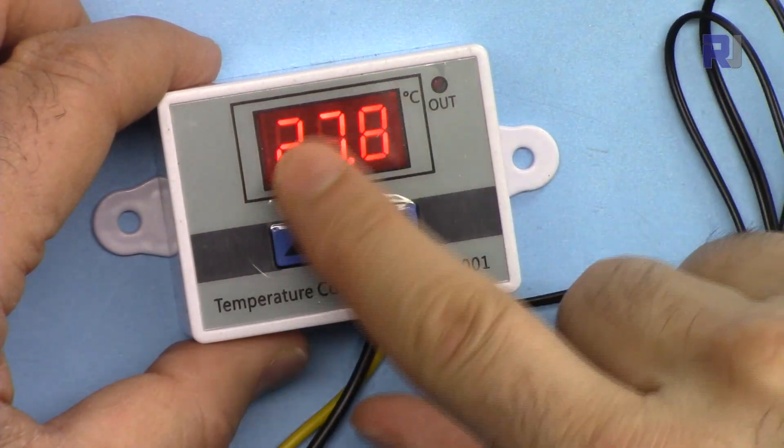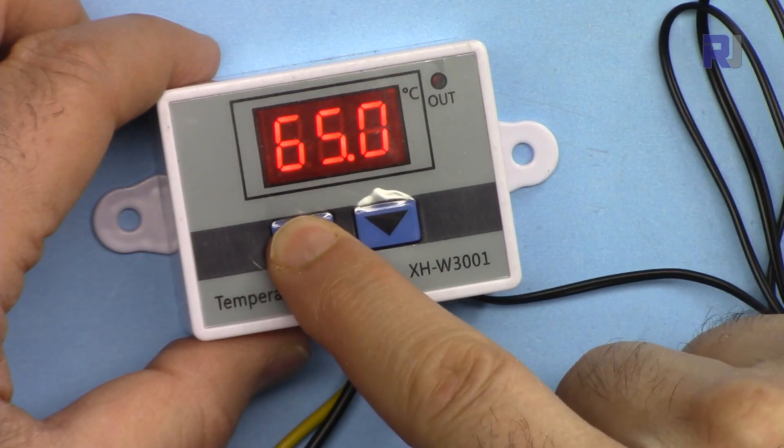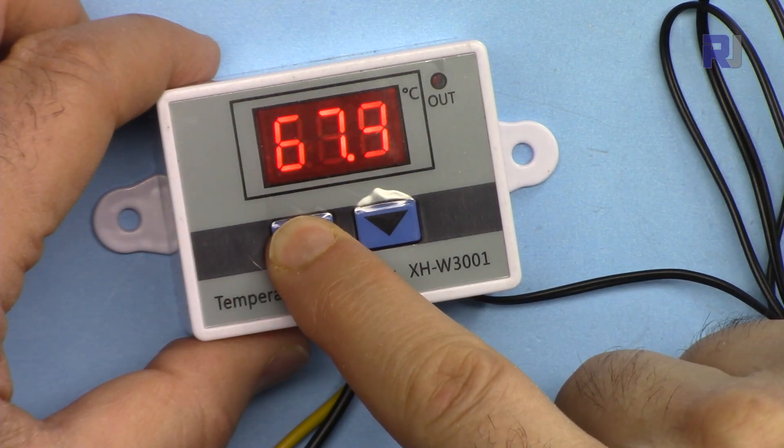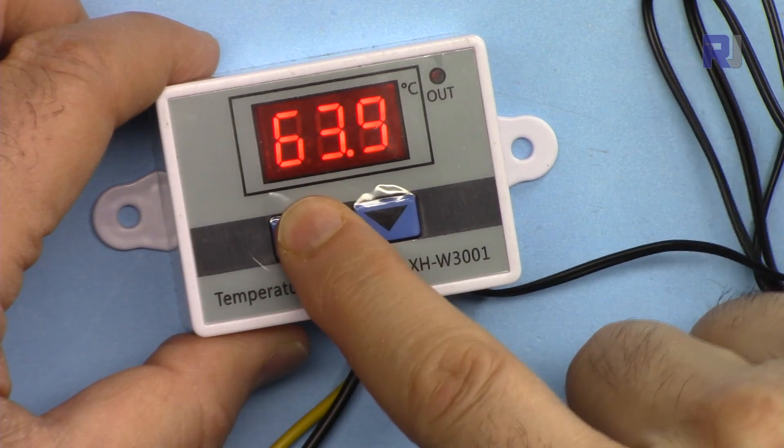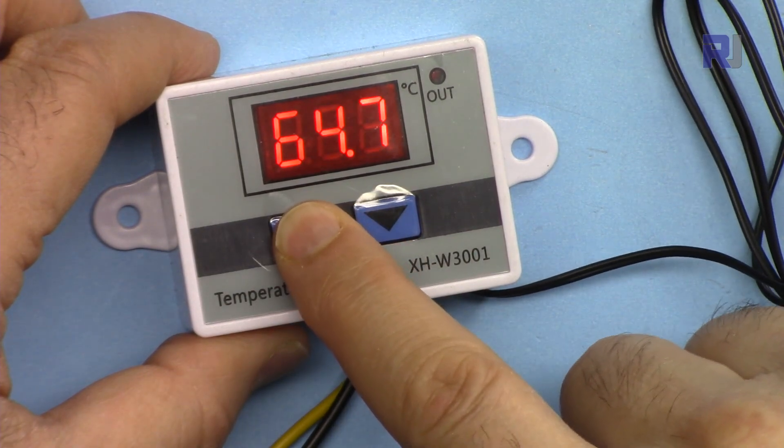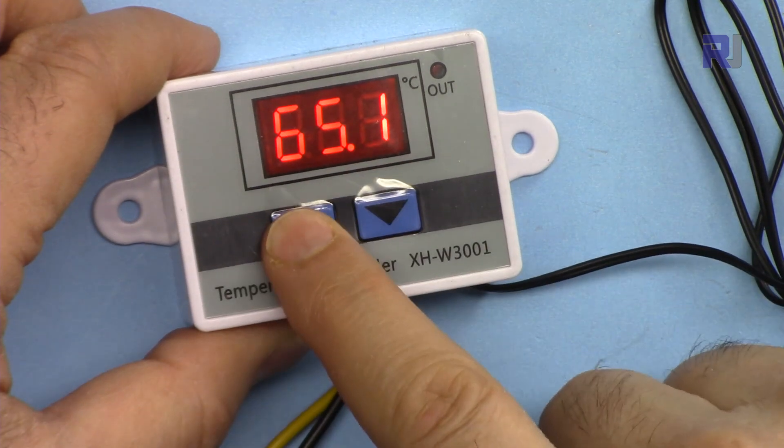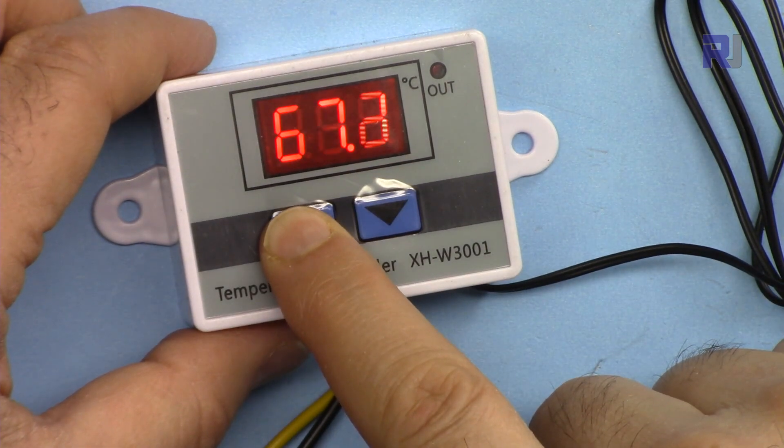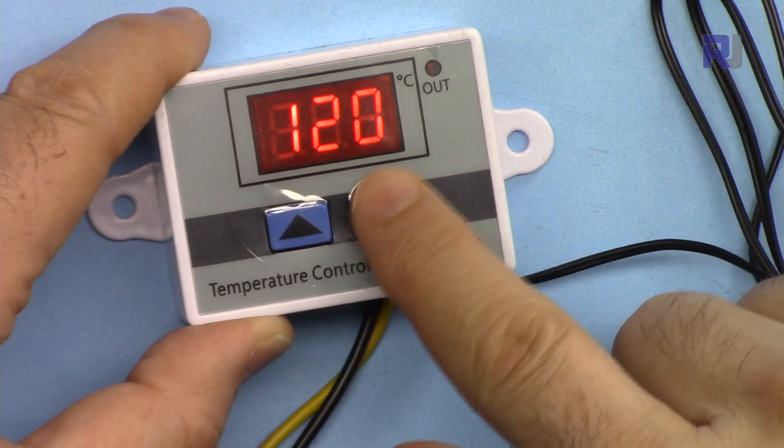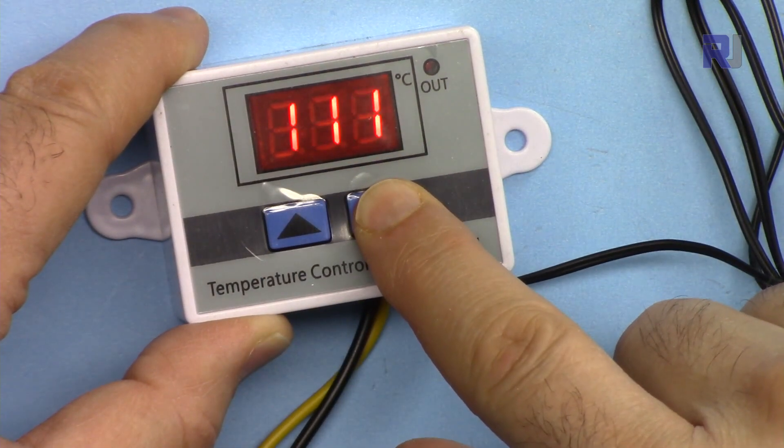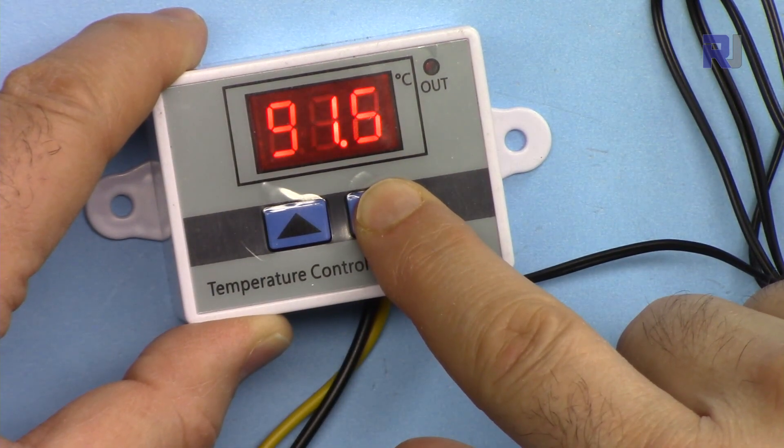We have two temperatures, start and stop. If you want to change the starting temperature or stopping, bring it on the screen and then hold this. As you can see you can increase or decrease it, and if you hold this it will go much faster. Let's see what is the maximum.